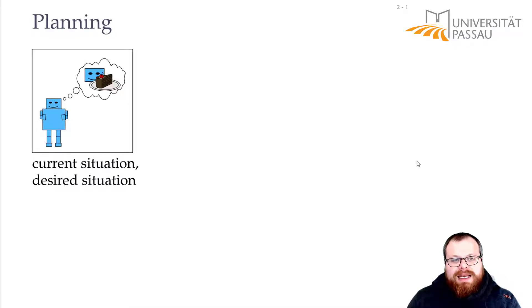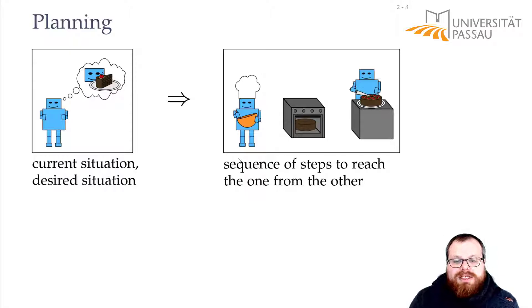If you want to do some planning, that means you are in some current situation. For example, you are a robot standing in your room, and there is some desired situation—you might want to eat some cake. To get to that situation, you have to use an algorithm to reach your desired situation. An algorithm is just a sequence of steps to reach it. So first you have to mix the dough, then you have to bake it, then you have to cut the cake, and then you can eat it.